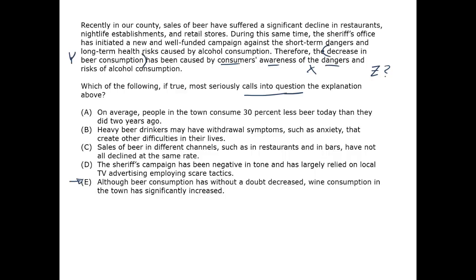We can confirm that the other answer choices are objectively inferior. A either strengthens the argument or is irrelevant. B gives a reason why beer drinkers might keep drinking beer, but it doesn't shed light on what has caused this particular sequence of events. C says that not all the rates of decline are the same — that's not so hard to believe. Bars could be down 10% and stores could be down 12%, and it could all be due to the sheriff's campaign. D might reflect negatively on the sheriff, but it doesn't mean that the sheriff's campaign hasn't caused the change.